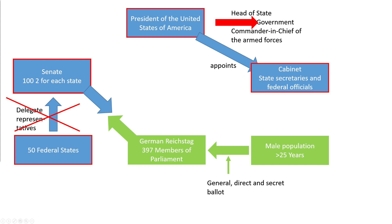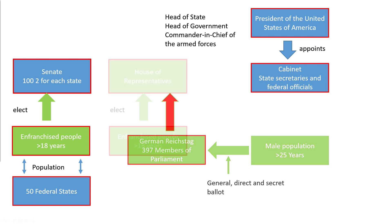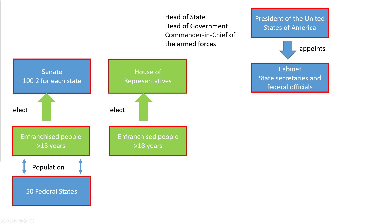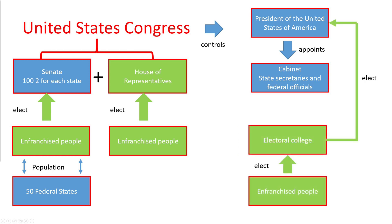Until 2013, the federal states were chosen by the state legislatures, not by popular vote. The US House of Representatives corresponds to the Reichstag. Men over 21 had the right to vote; from 1920 also women, and in 1971 the age was reduced to 18. Senate and House of Representatives formed the United States Congress, which controls the President of the United States in acts of legislation and has the right to declare war. The President of the United States is elected indirectly through an electoral college. Around 1900, less than a quarter of the people living in the United States of America had the right to vote. In Germany the situation was not different.